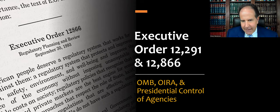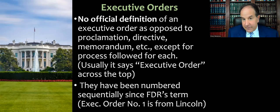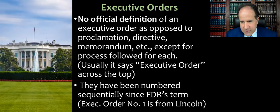I'm going to start with just a little bit of background about executive orders generally. The first thing to know is there's actually no official or legal definition of an executive order, as opposed to a proclamation, directive, presidential memoranda, or something like that. Every White House puts out all of these things: proclamations, directives, executive orders, and so forth. They might follow slightly different processes for each one. Usually an executive order says 'executive order' across the top, and executive orders have been numbered sequentially since FDR's term during the New Deal.